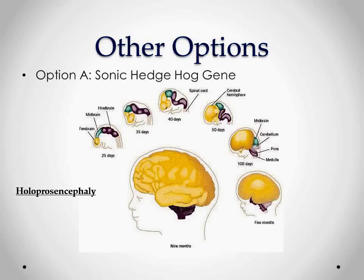Now for the other options. Option A is the sonic hedgehog gene. The sonic hedgehog gene is responsible for normal neuronal development, as this diagram shows. It is also abbreviated as SHH gene and is responsible for normal CNS development. If it is mutated, it leads to an abnormality known as holoprosencephaly. In holoprosencephaly, the cerebrum fails to divide in the midline, resulting in one large cerebrum with only one centrally located ventricle — the two cerebral hemispheres do not separate.